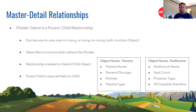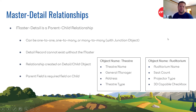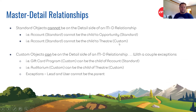Master-detail is a tight parent-child relationship. The master is the parent, the detail is the child, and the detail record cannot exist without the master. If you delete a master record, the associated detail records are also deleted. The relationship is created on the child object, and the parent field is required — it cannot be left blank. I use a custom object called 'Theater' for examples, with a child object called 'Auditorium.'